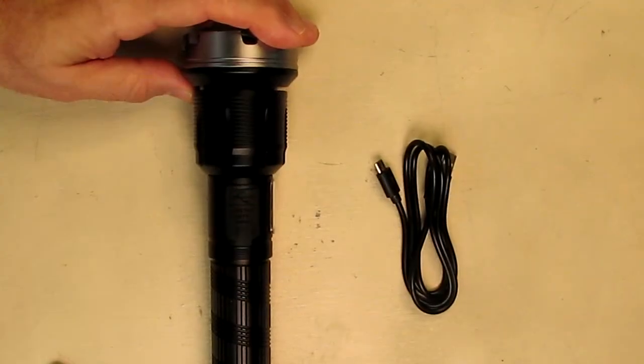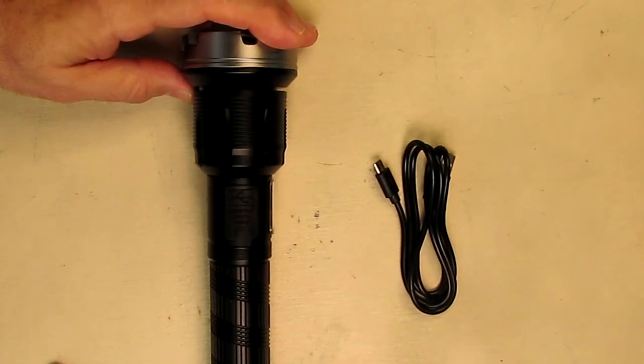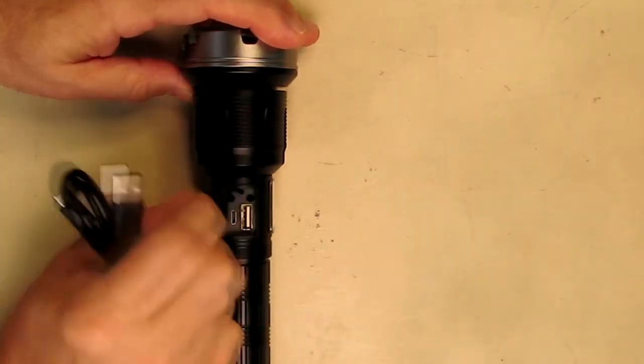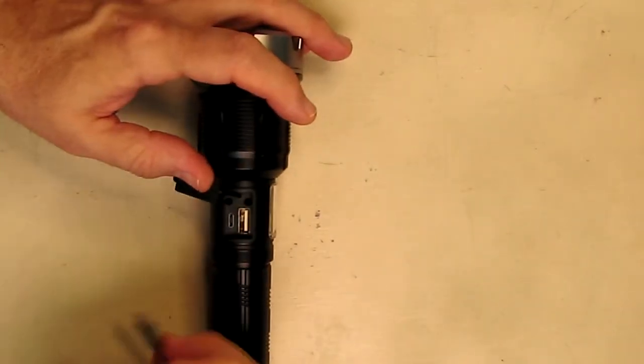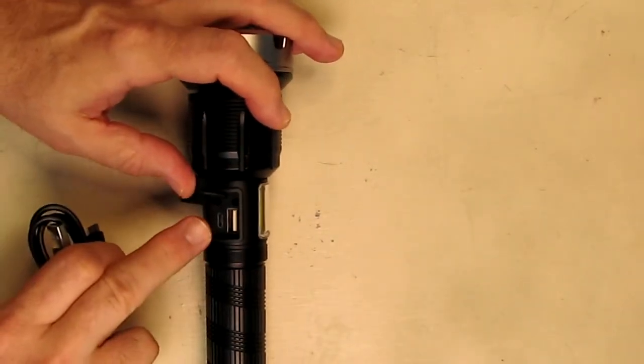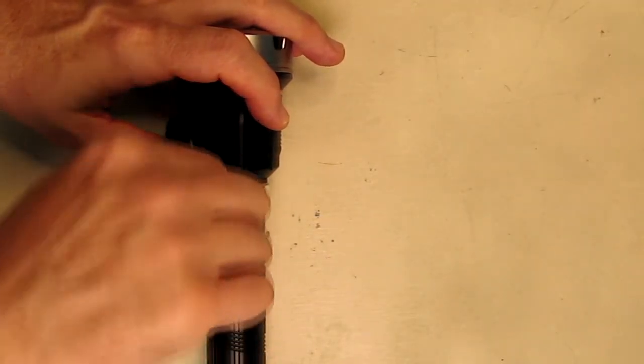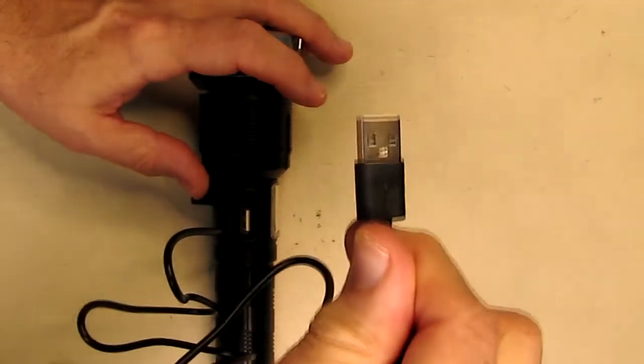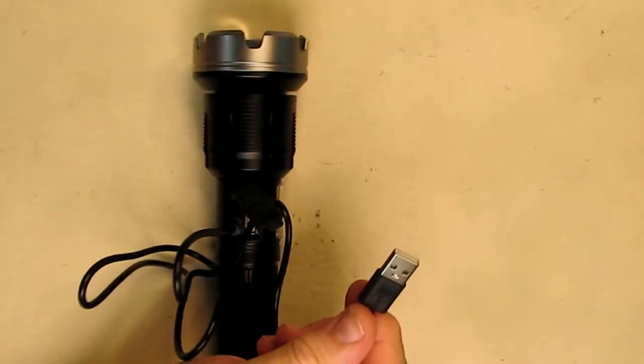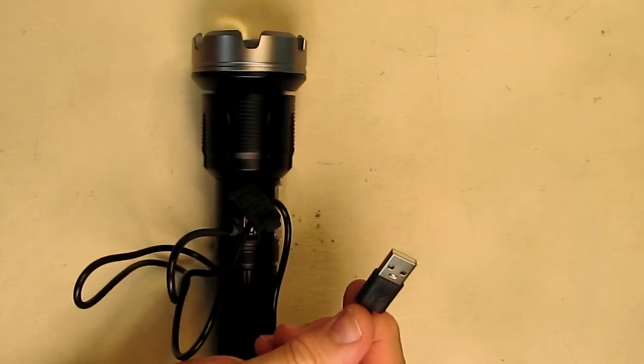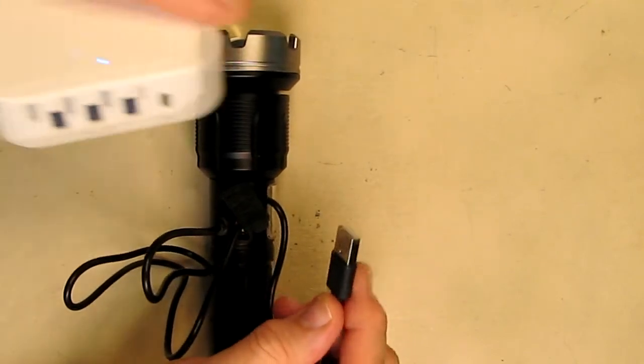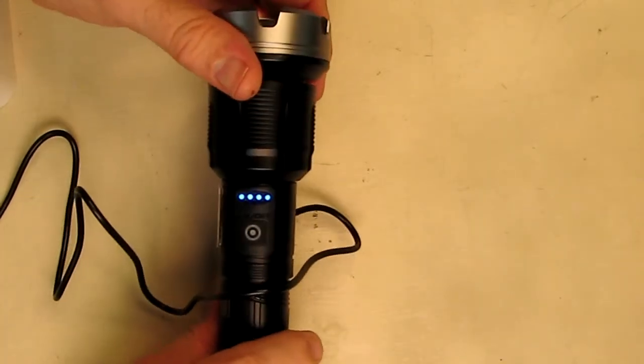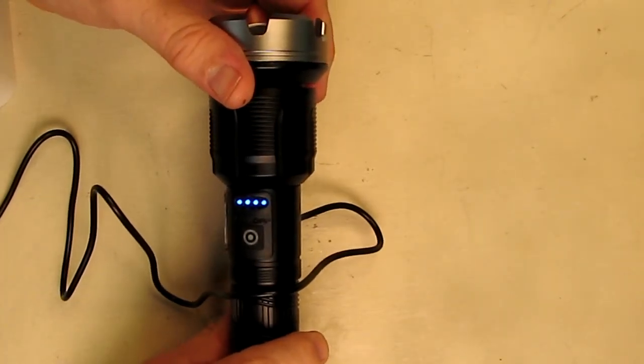It's very simple to charge the Vastfire flashlight. You take the included cable and remove the silicone seal right there, and you see there's a USB micro port there. You put the cable on there and the other end is the USB A, and you just go to any USB A 1 amp or more charging port, pick that one right there, and then it has a really nice display to let you know that it's charging.